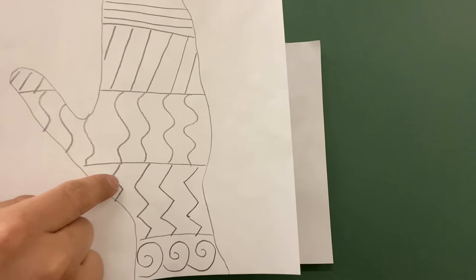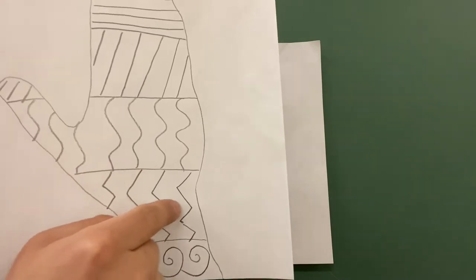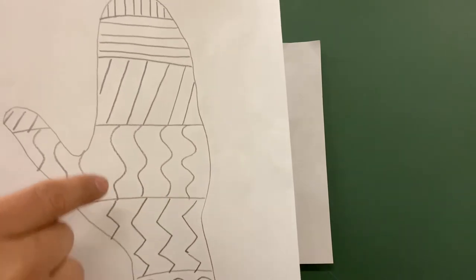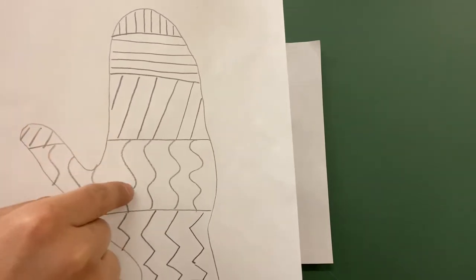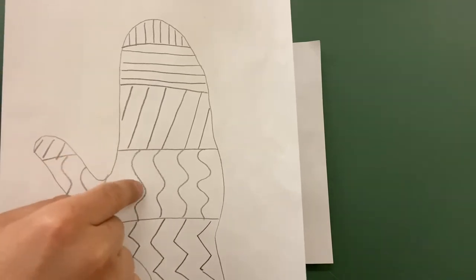What about these lines here? They sort of look like lightning bolts. These are called zigzag lines. These lines here, curved lines or bumpy lines.